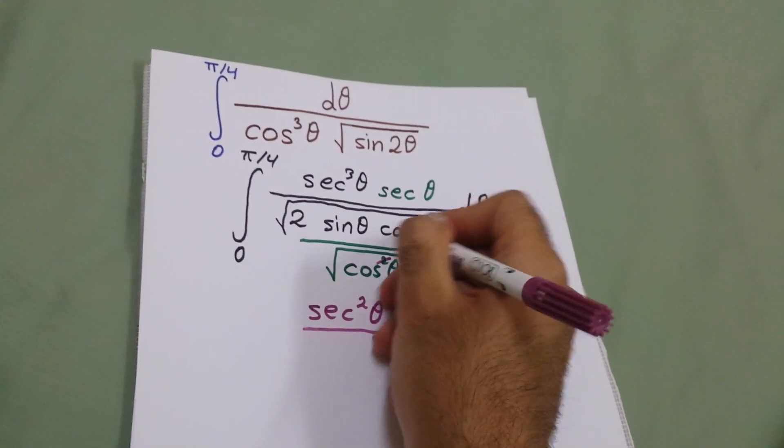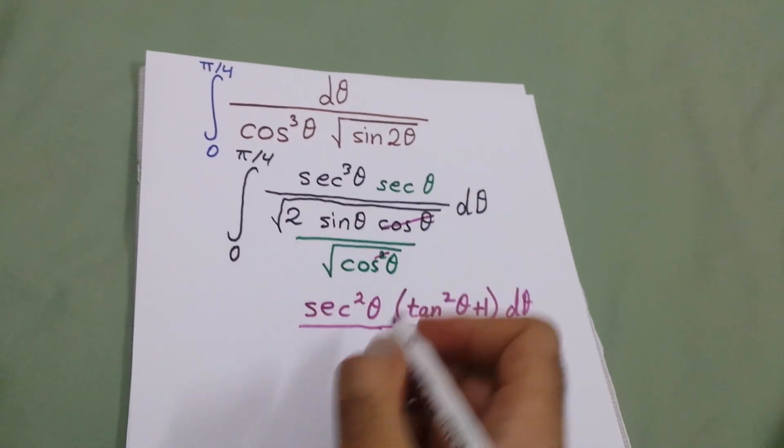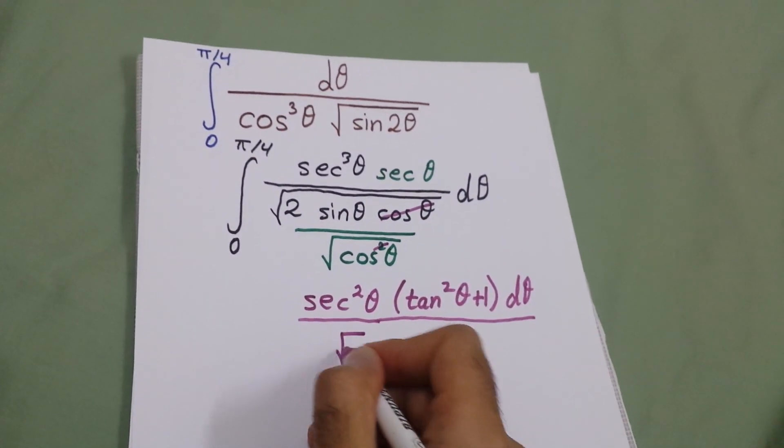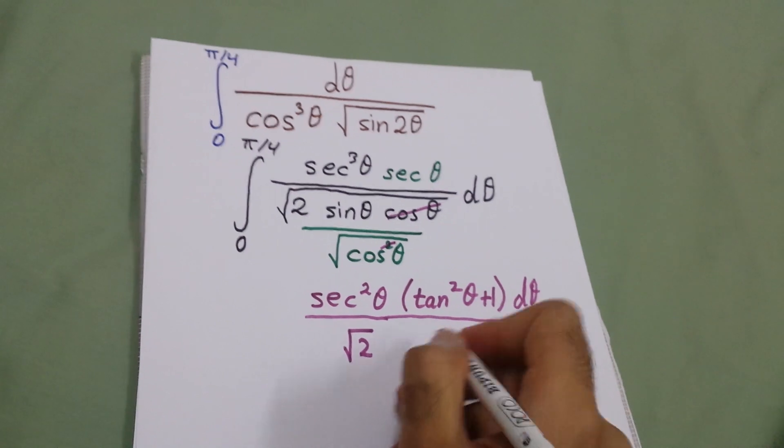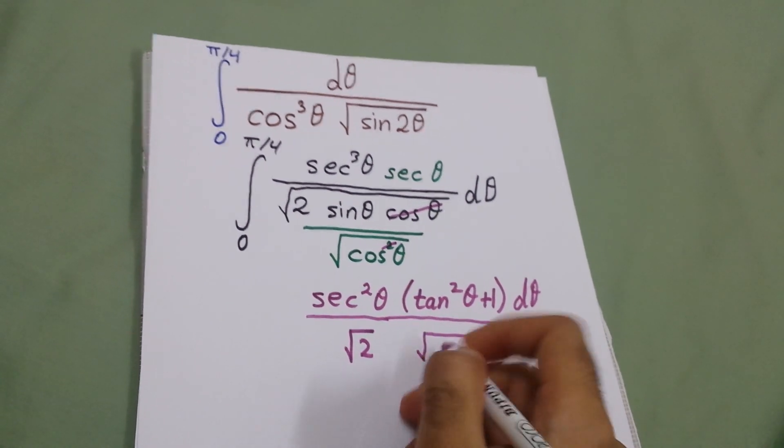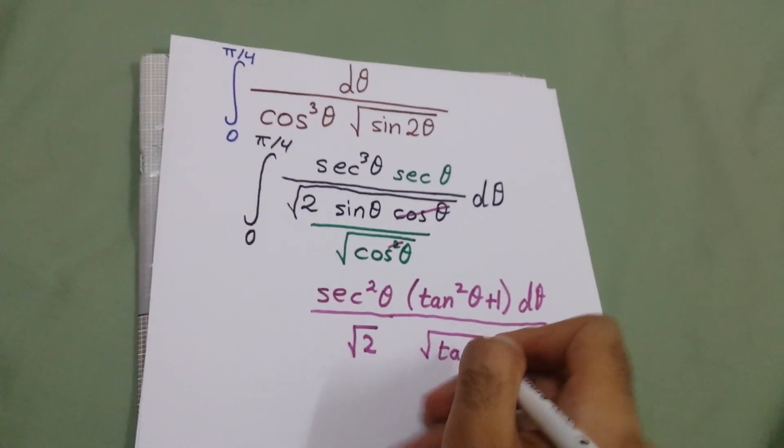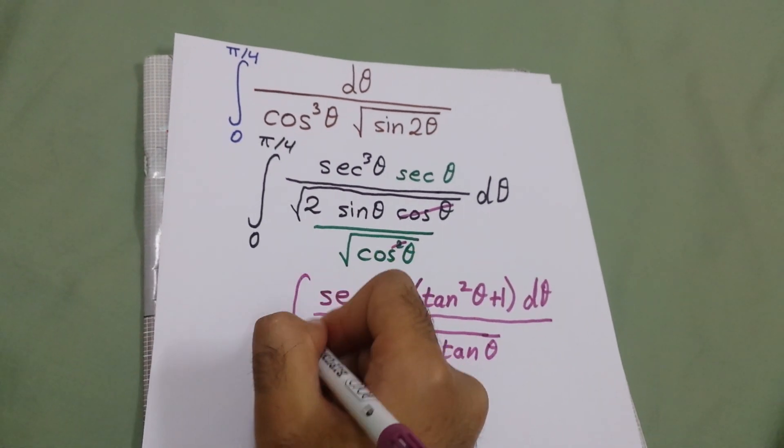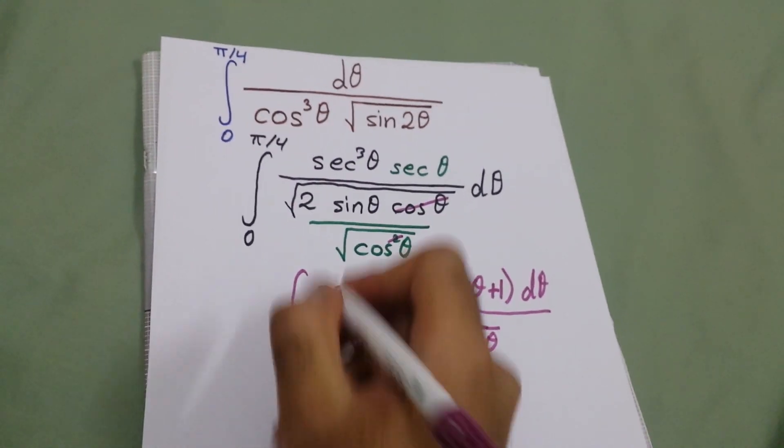We will have square root of 2 times square root of tan theta, from 0 to π over 4.